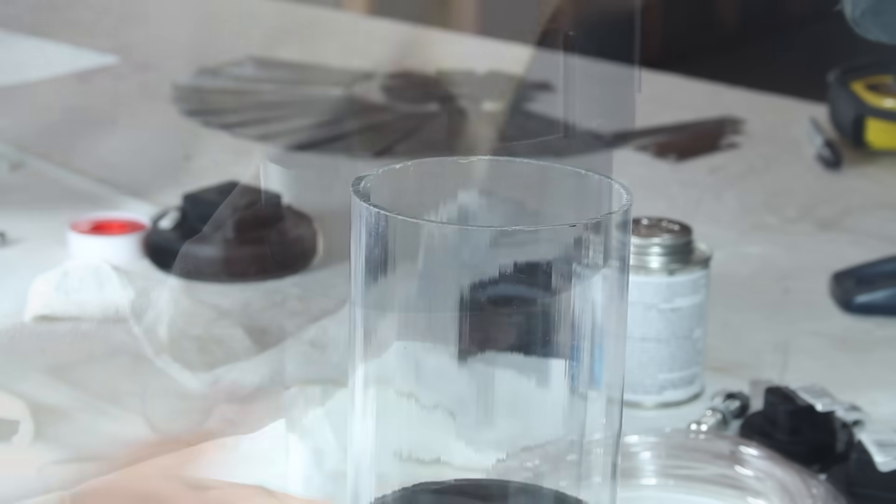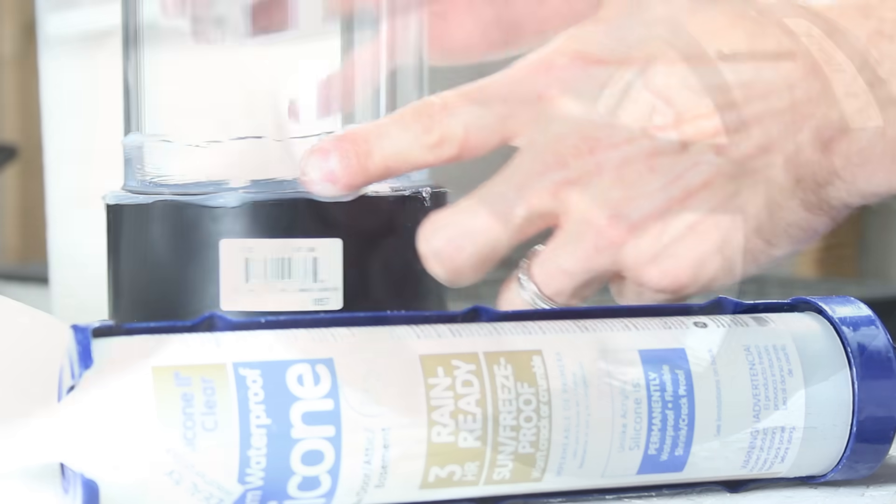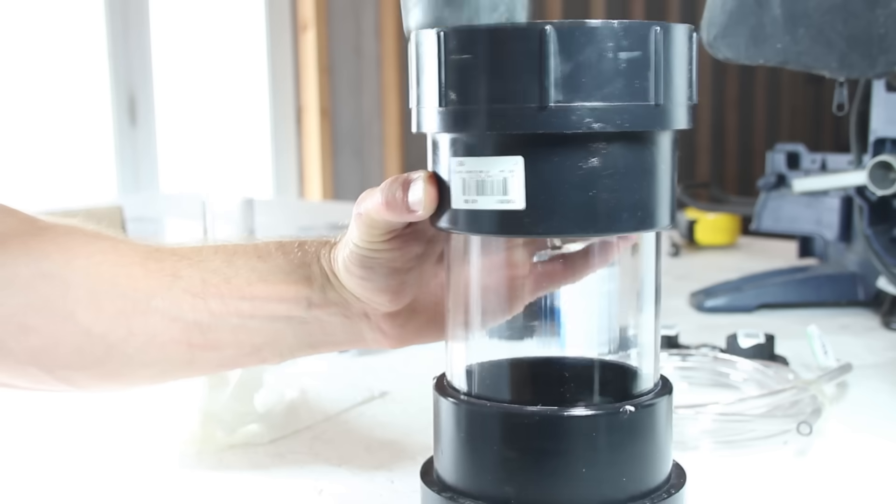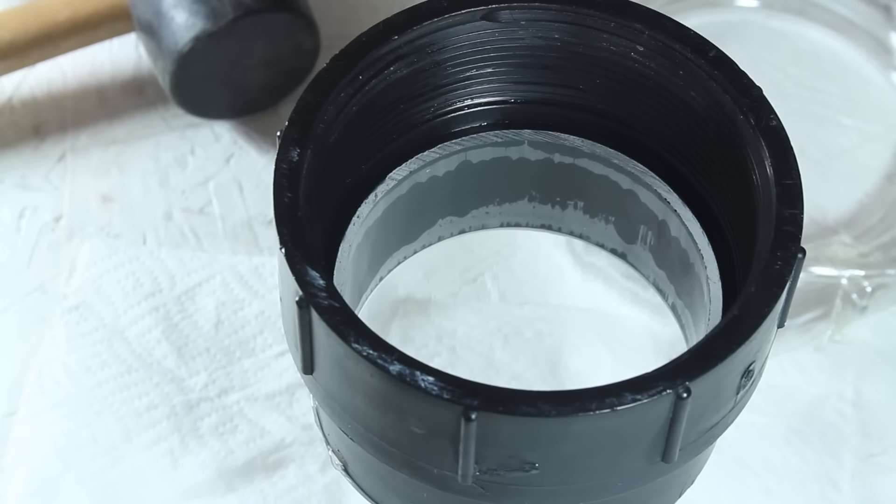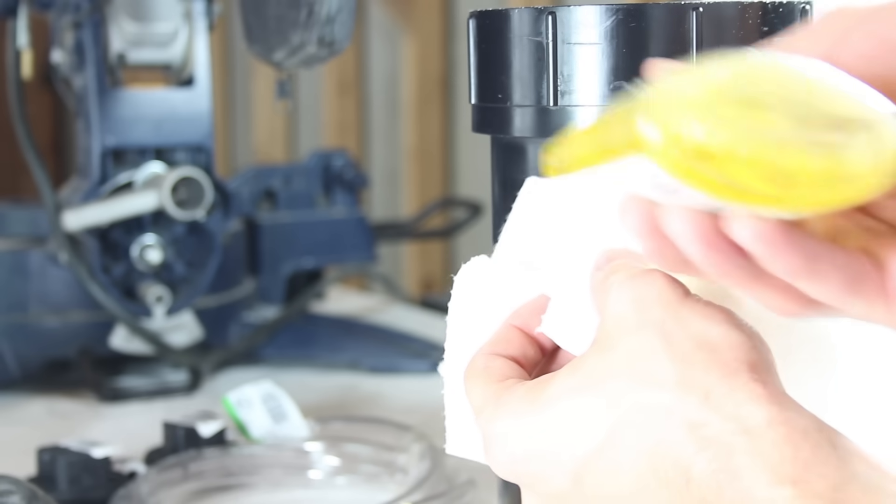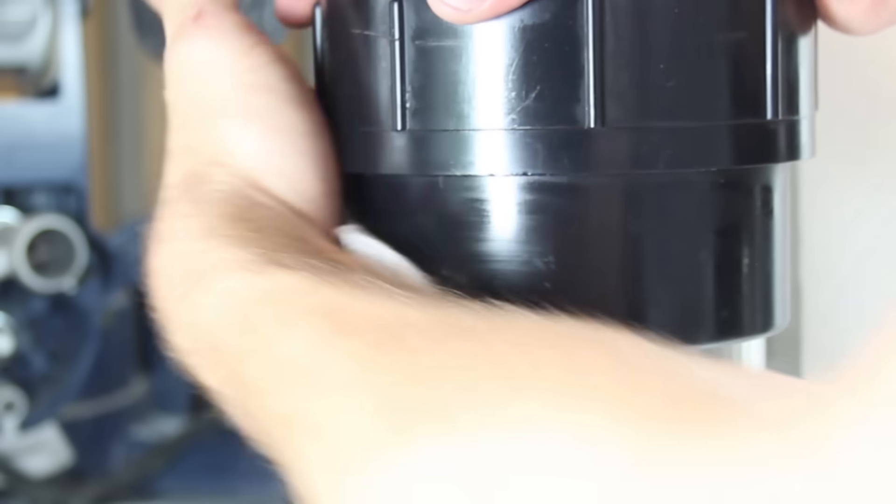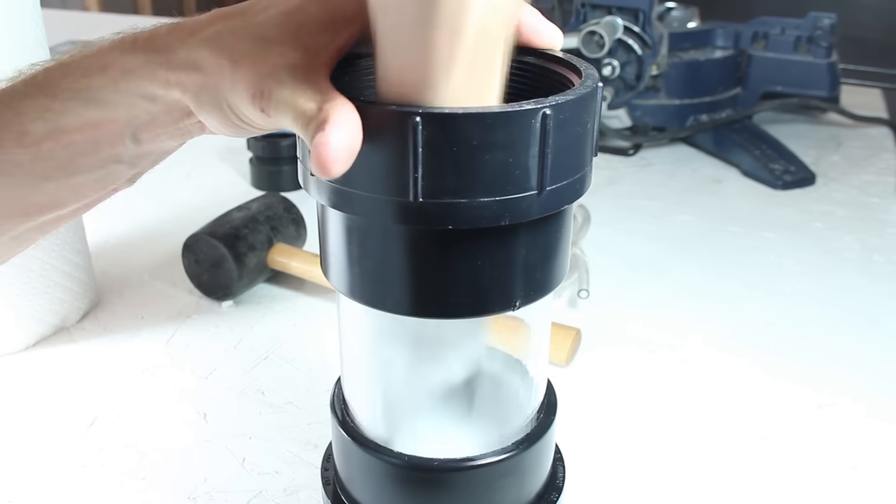Now we can flip this over and repeat the process of attaching, caulking this part and this part, tapping into place, and cleaning up the excess. While I'm in the mood for cleaning, I'll use my adhesive remover to assist in cleaning off the UPC stickers, then give everything one final wipe down.